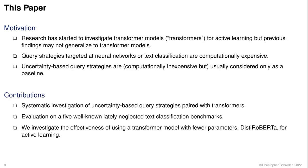While research has started to investigate transformers for active learning, previous findings may not generalize. Moreover, previous query strategies targeted at neural networks or text classification are computationally expensive. Therefore, we revisit uncertainty-based query strategies, which are computationally inexpensive but are usually considered as just a baseline.